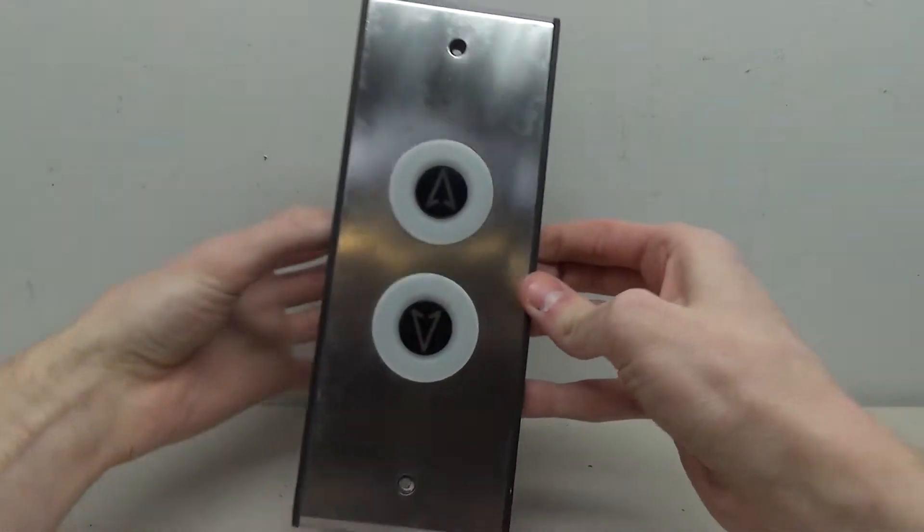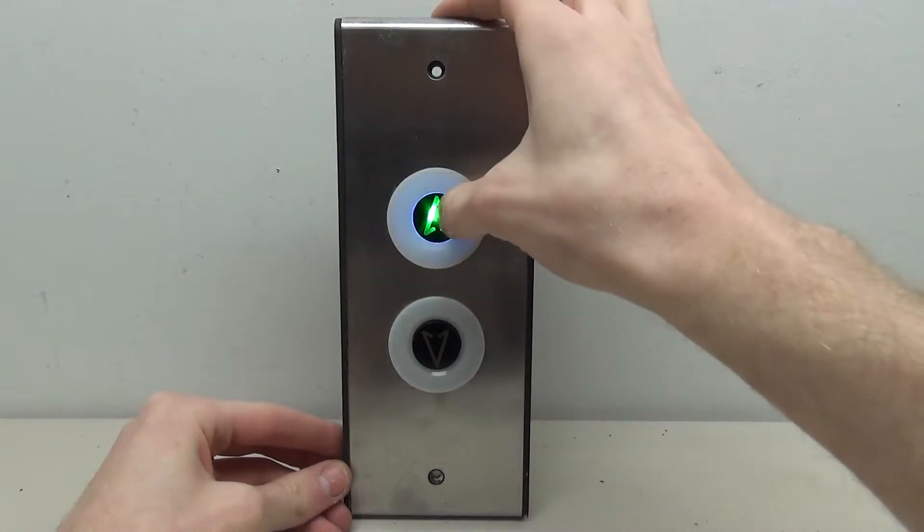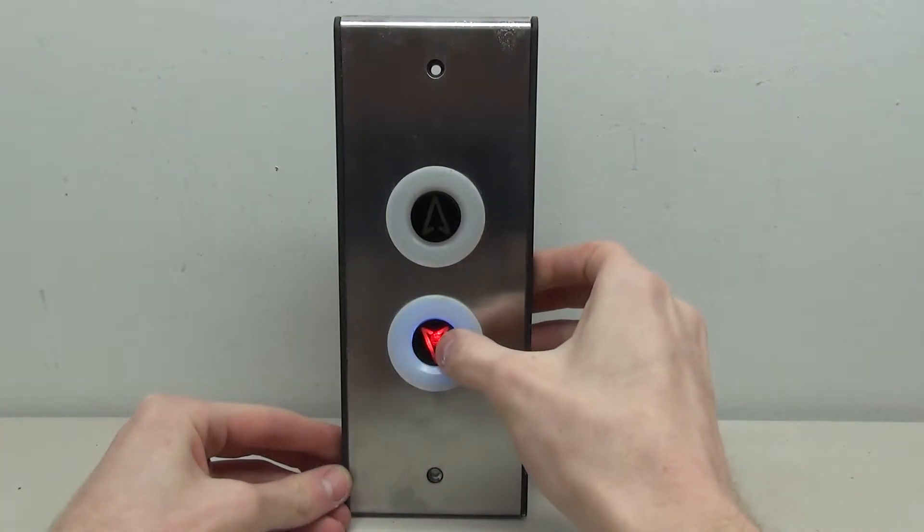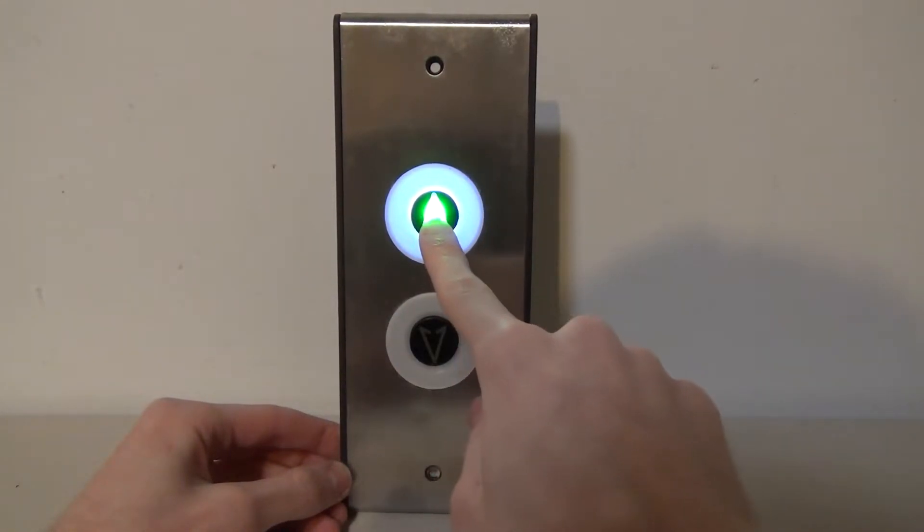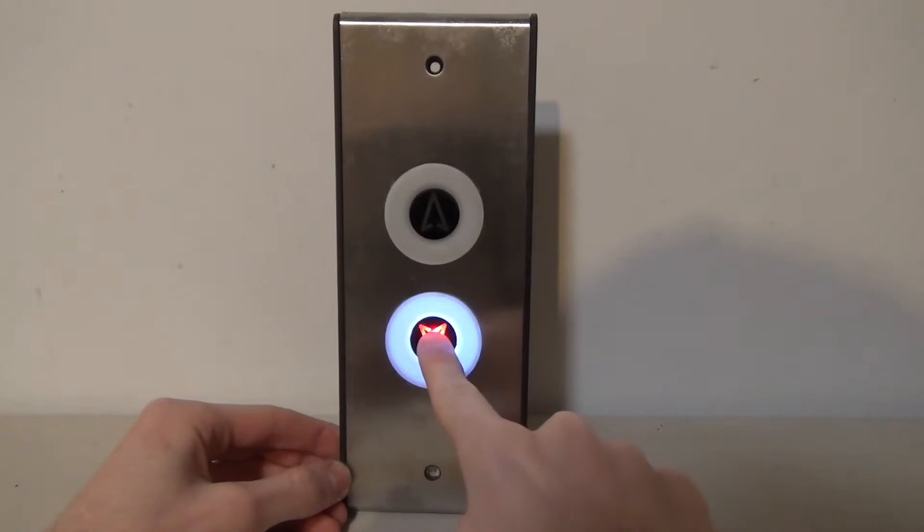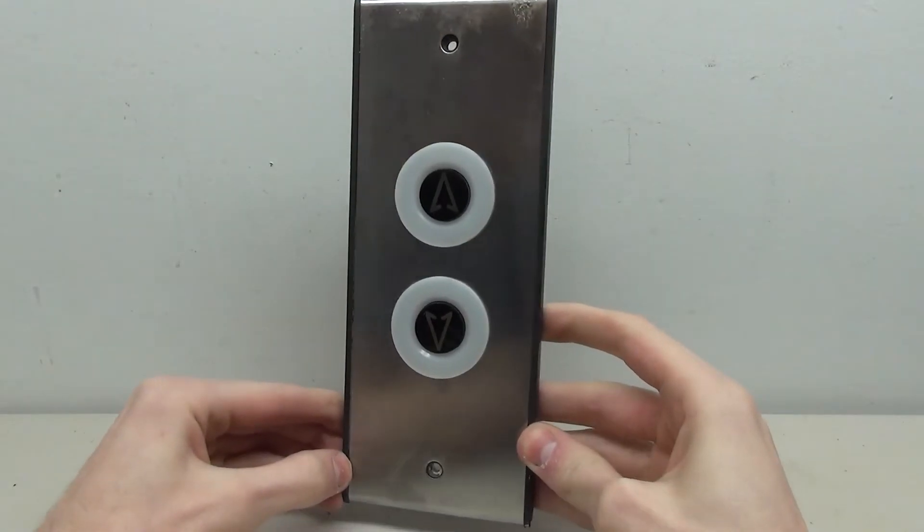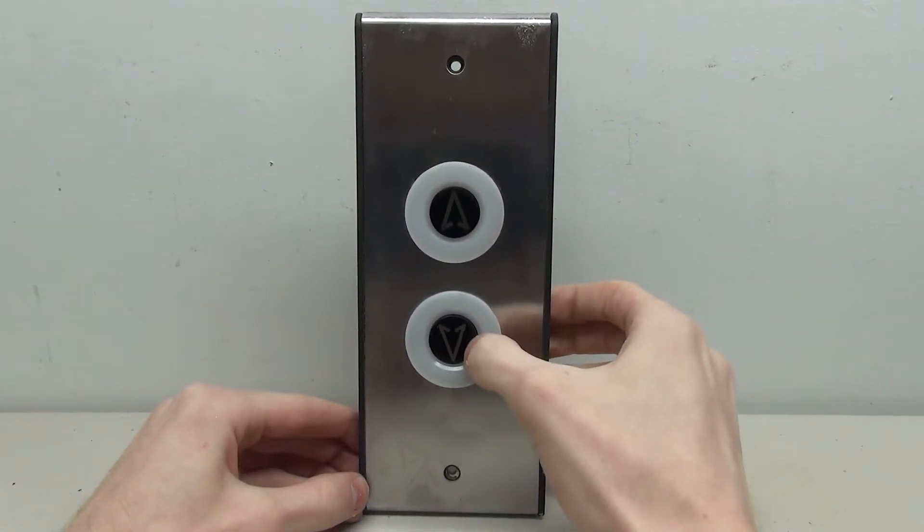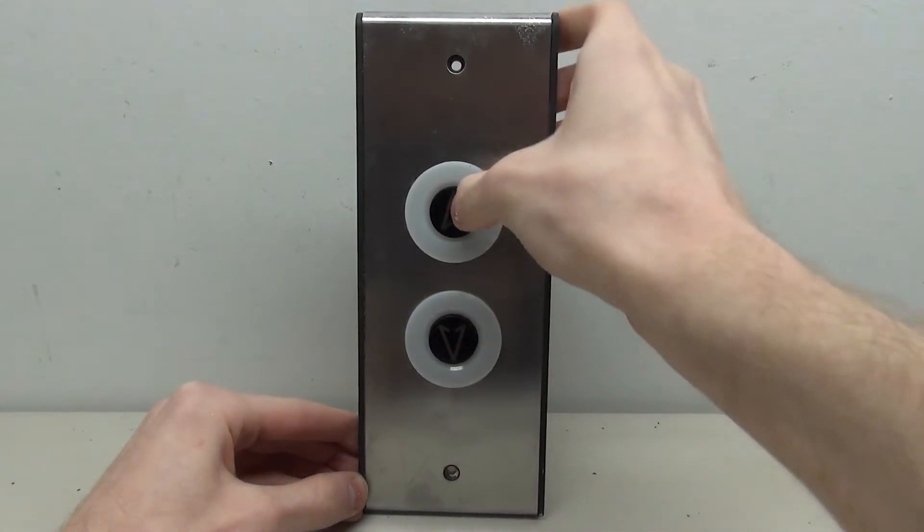And here it is, the completed button. So this thing went from being in pieces and completely disgusting to a fully working button. If we turn off the lights we can see how it works a little bit better. Not only do the arrows light up, but the rings around the buttons light up as well, which looks really awesome. So I hope you enjoyed this little parts project. This was definitely a lot of work but a lot of fun, and I'm very happy with the way this piece came out.